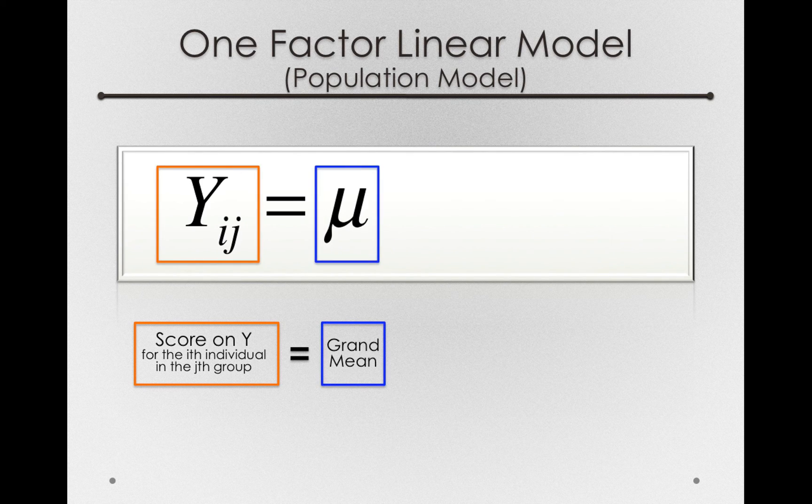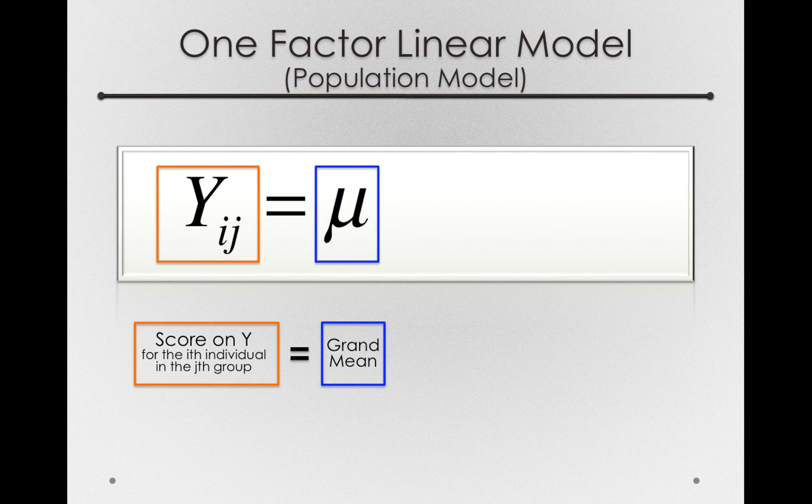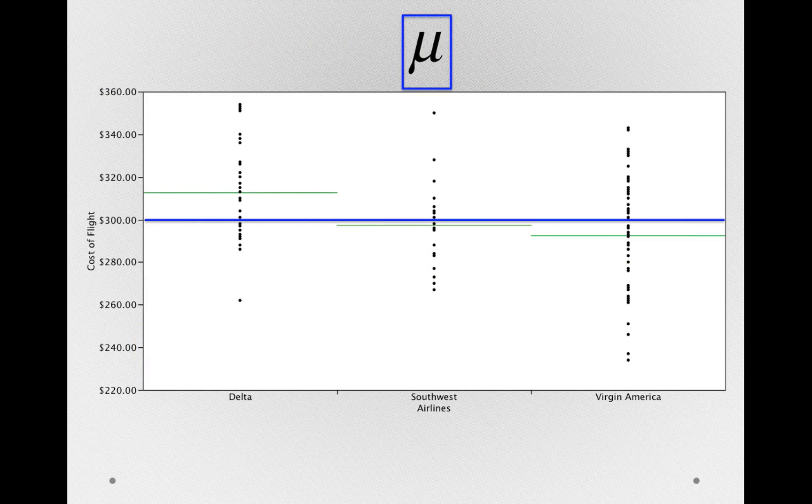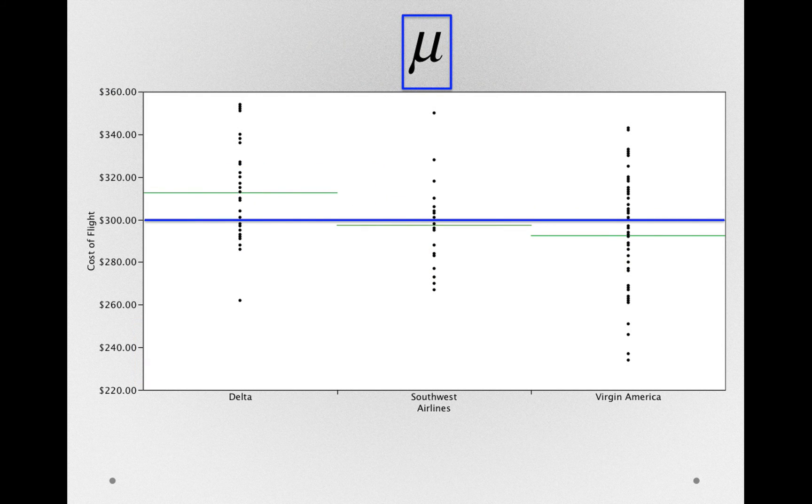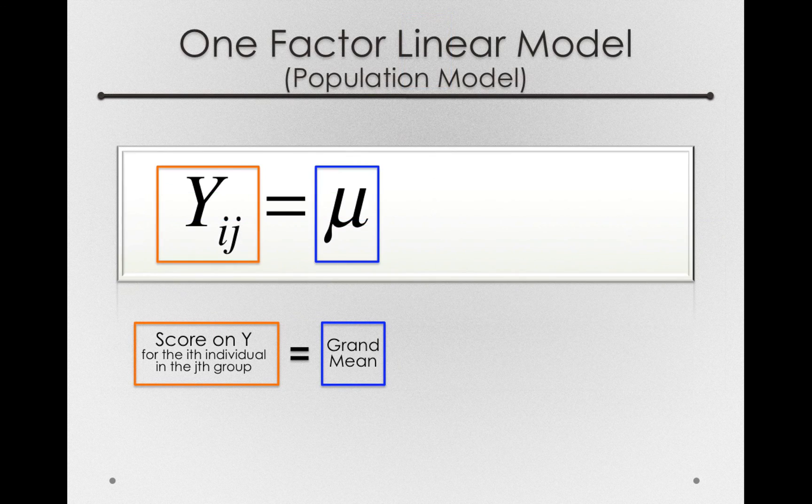In this case, we'll call this the grand mean, or the population mu. Again, we're working with the population here, so mu represents the overall average of every individual. Notice that mu has no subscripts in this model. There's only one population mean. A mean is not represented for each individual group or each individual person, so there's no i and no j subscripts. It's just the overall grand mean.